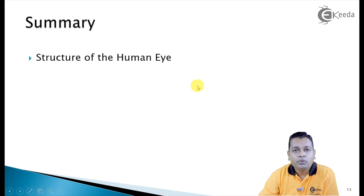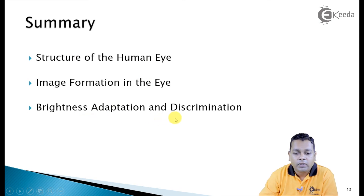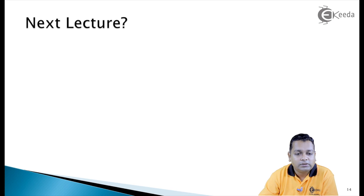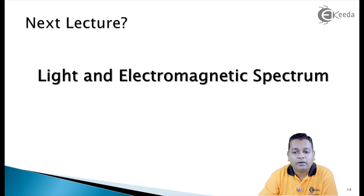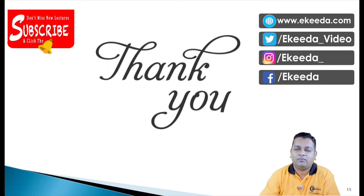To summarize the second chapter so far: we started with the structure of the human eye, followed by image formation in the eye, and now brightness adaptation and discrimination. These three together form the elements of visual perception, which are important before moving on to digital image formation using sampling and quantization. The next lecture will cover light and the electromagnetic spectrum — the fourth video of the second chapter.